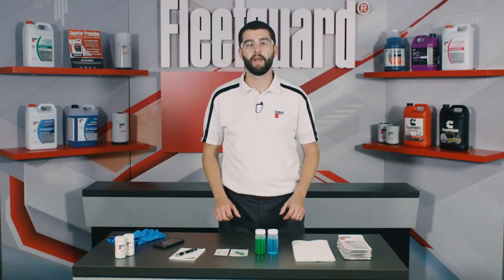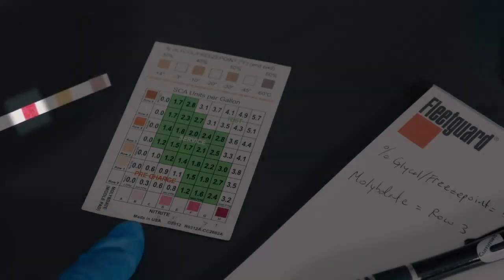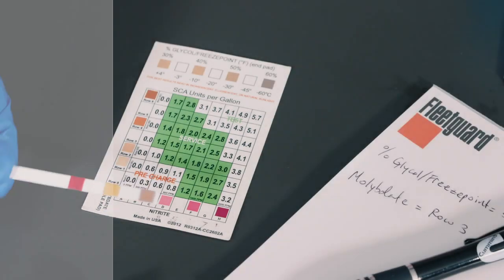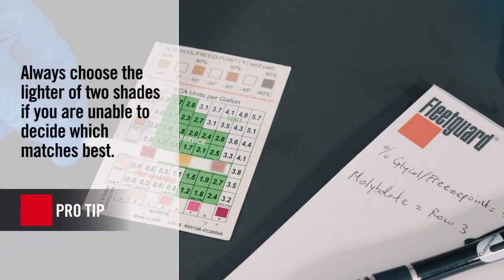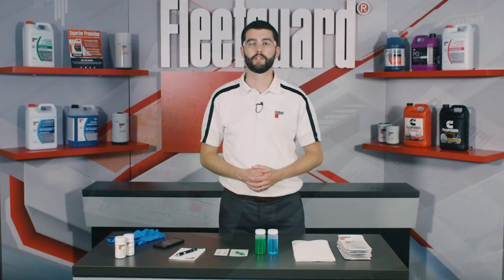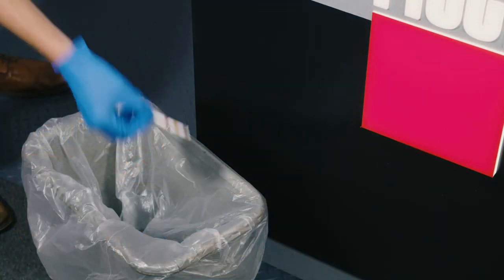Finally, let's compare the bottom pad to the horizontal axis labeled nitrite and containing columns A through H. This pad best matches to column F, so let's note that as well. We have now completed the physical testing, so we can dispose of the used test strip and move into the interpretation of results.